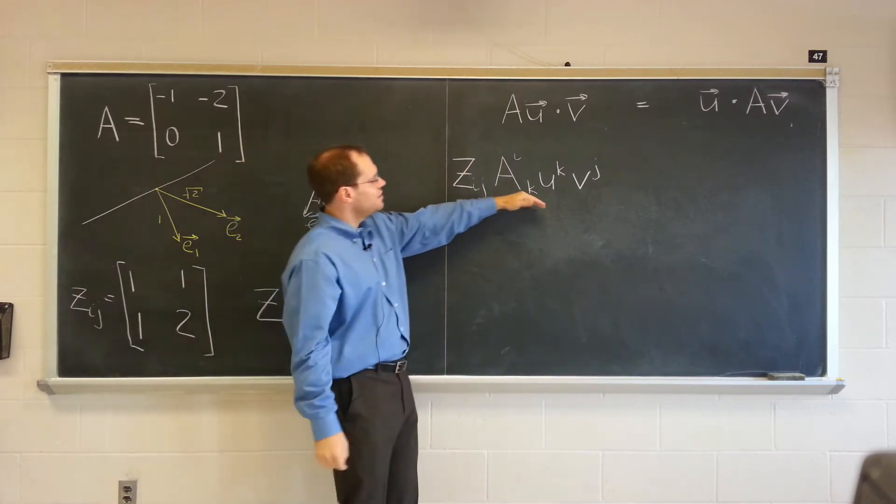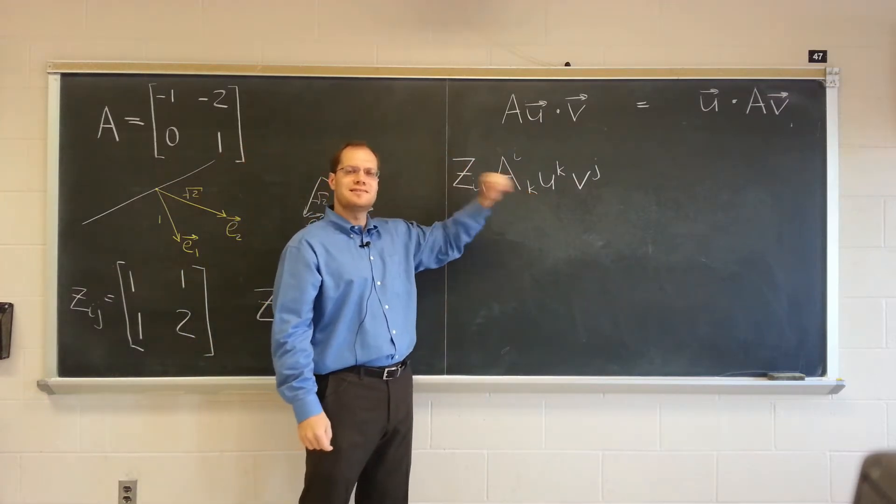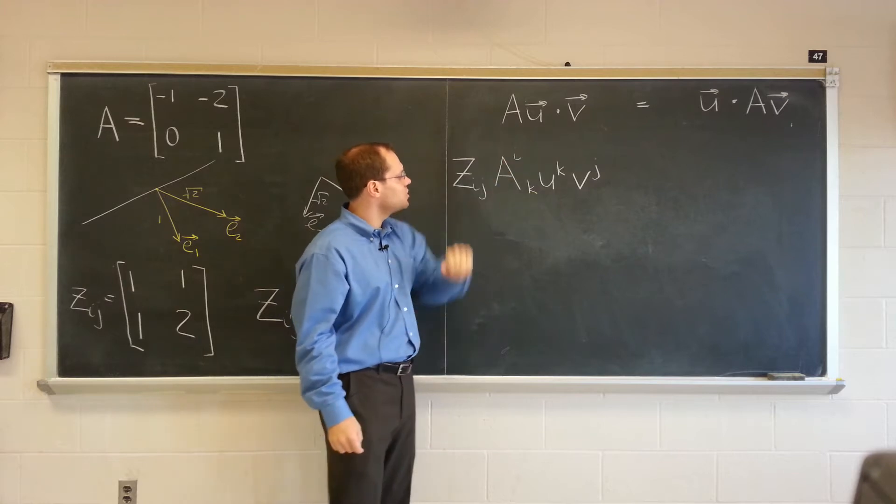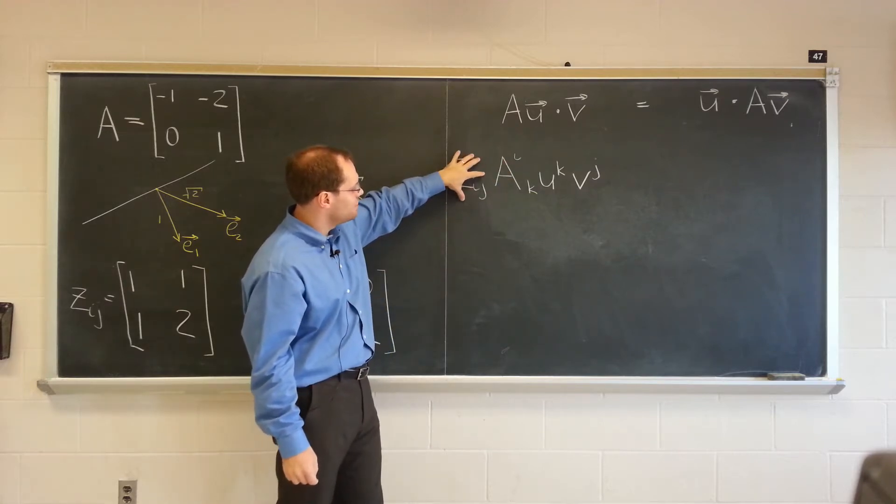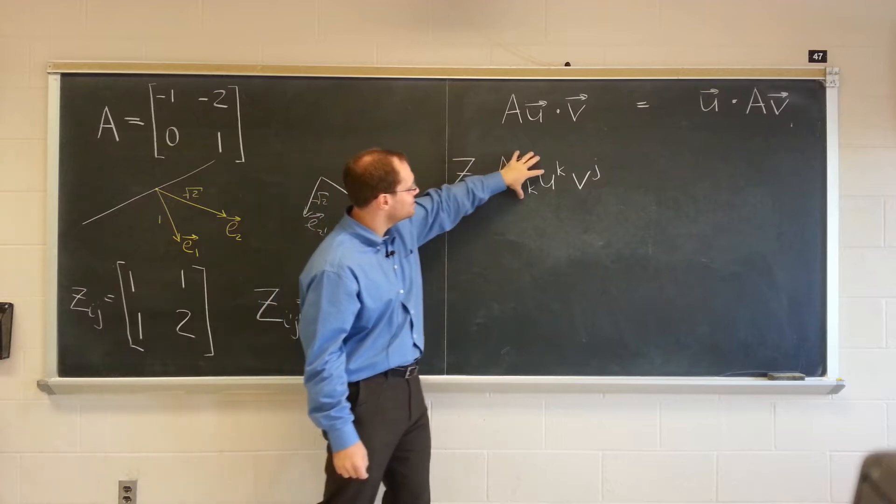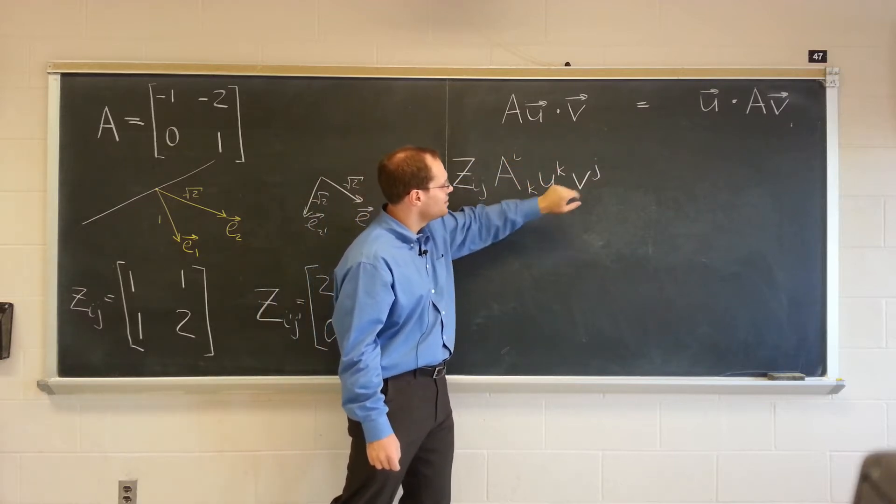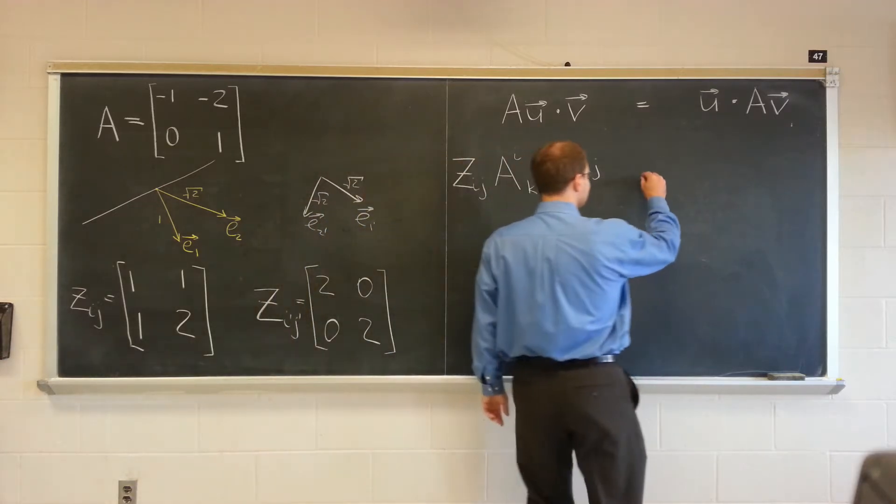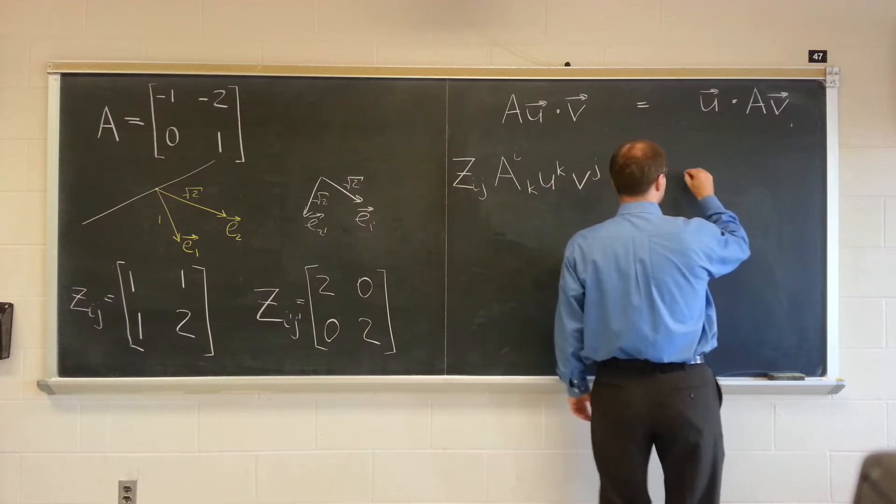So here's the tensor notation representation of what we have on the left. This being responsible for the inner product. This is the component of effective u and this is the component of v.